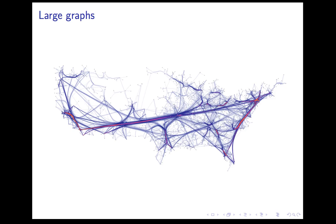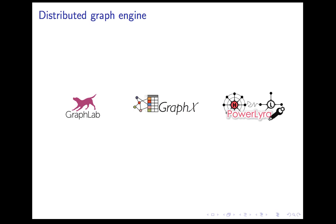Sometimes a graph is too large for a single computer. Hence, distributed graph engines are introduced to process these large graphs using a cluster of computers. For example, GraphLab, GraphX, and PowerLira.